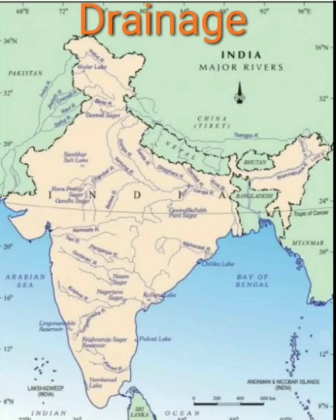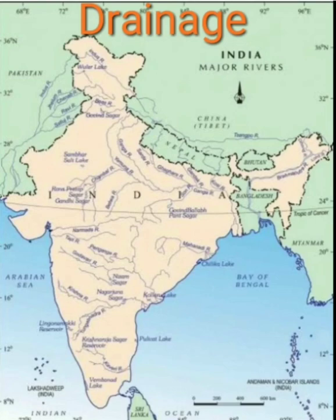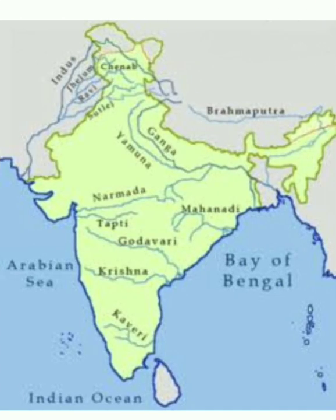I'm going to discuss Geography Chapter 3, the Drainage chapter. Inside this, all the rivers which you can see on this map — any river can come in the exam, and that river will already be drawn on the map. You just have to identify which river it is. Mainly, these rivers which are drawn are the only rivers you have to study.